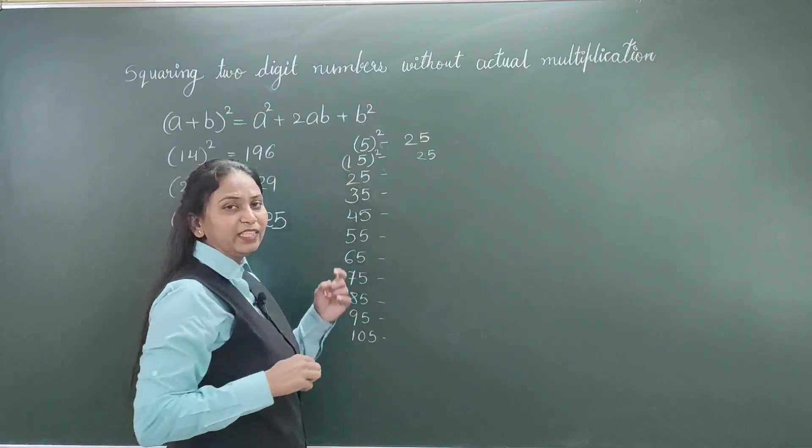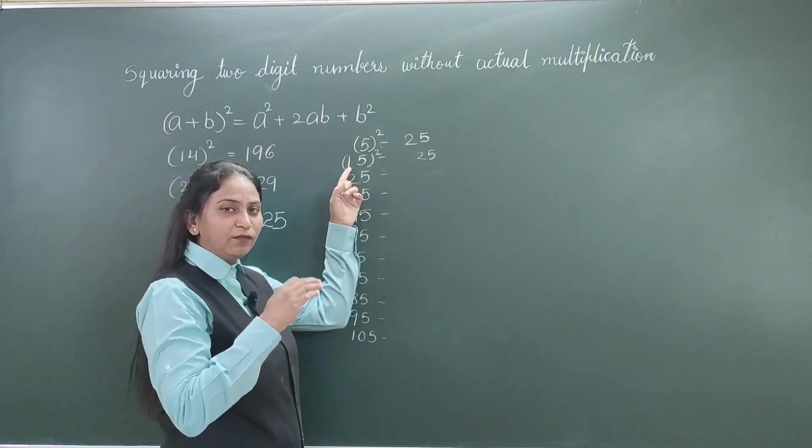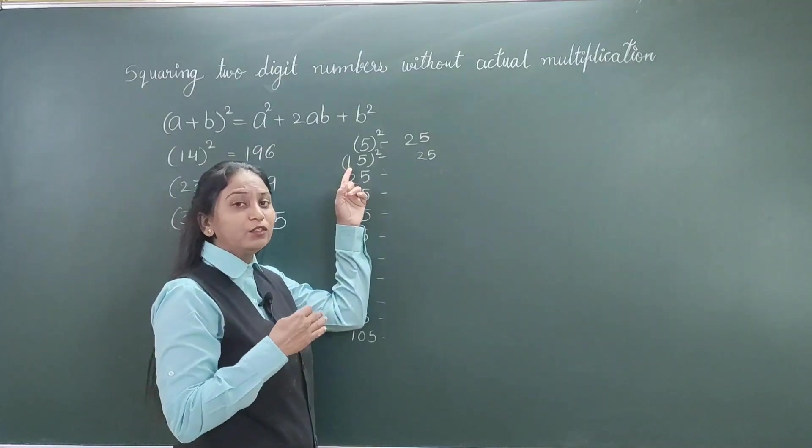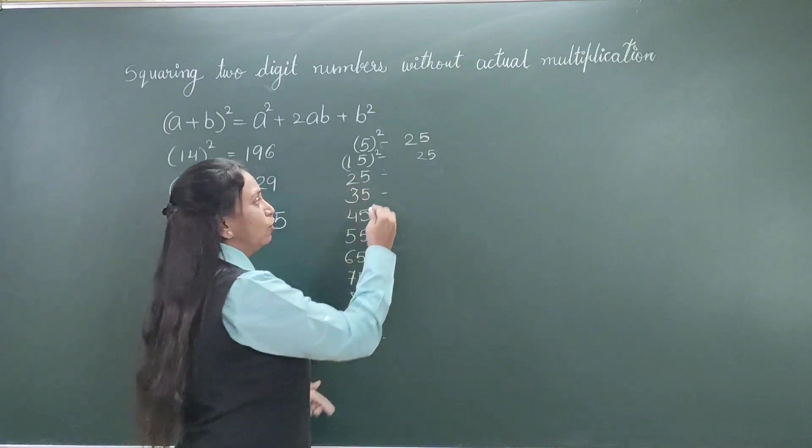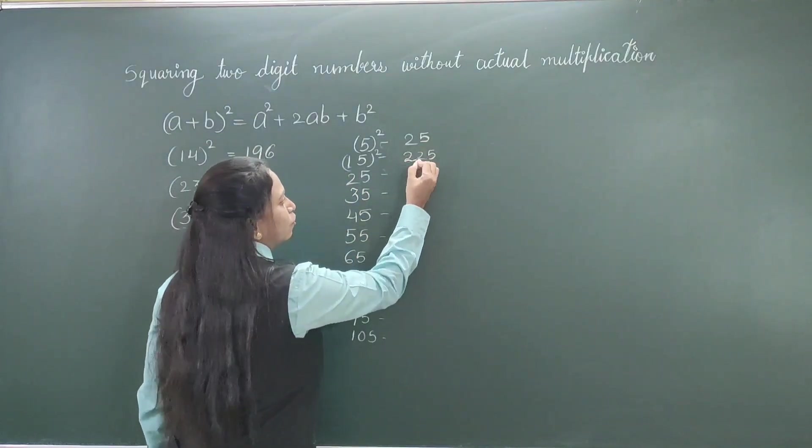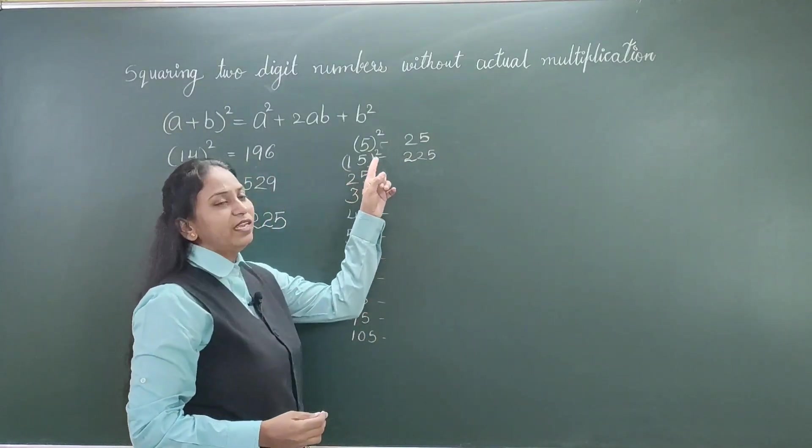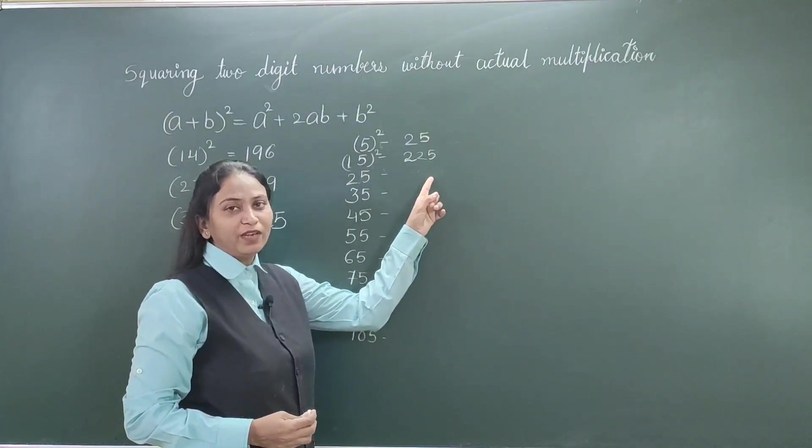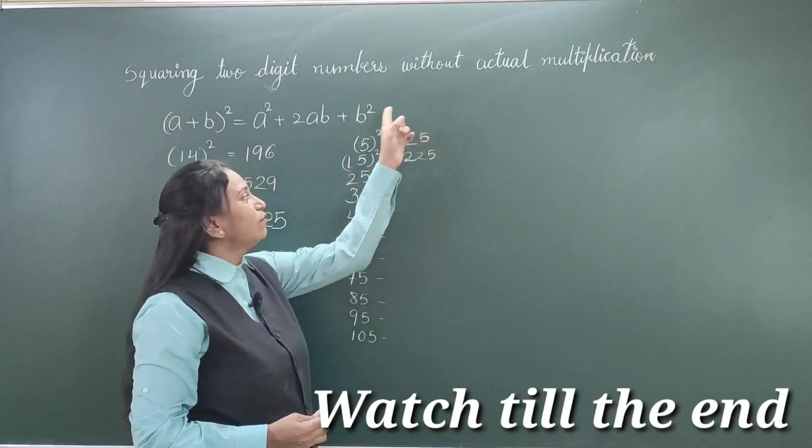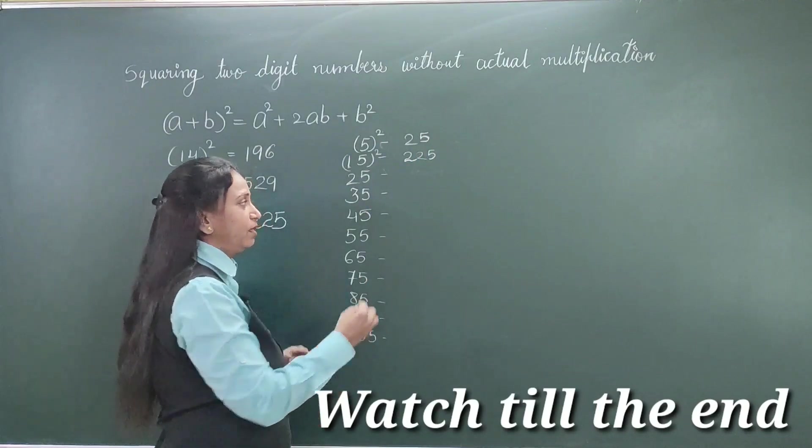So, here in 15, it is 1. So, after 1, we all know it is 2. So, multiply this digit with the next number. Multiply 1 with 2, it becomes 2. So, square of 15 is 225. You all know that and if you don't know, you can verify this by multiplying 15 with 15. So, we will proceed further.